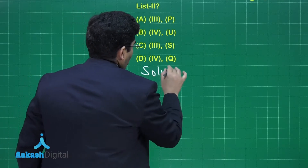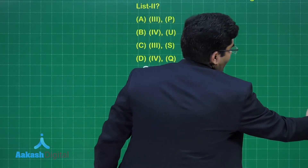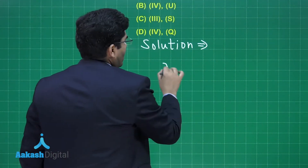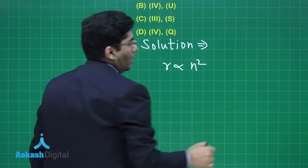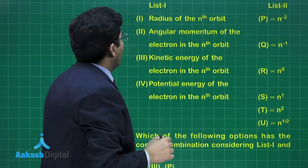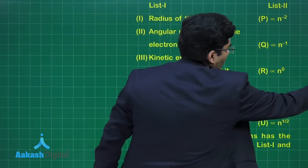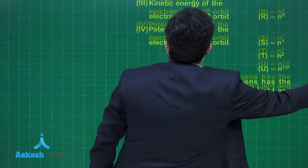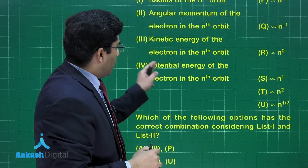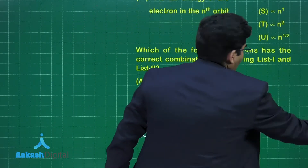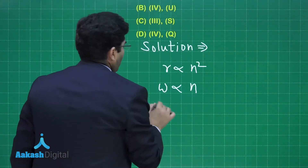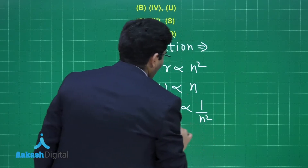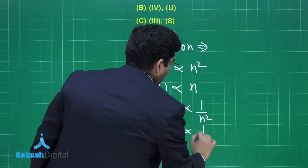Moving on to the solution. The first item in list 1 is the radius of the nth orbit. We know that Bohr's radius is proportional to n squared. I'm not including z because it's not needed for this question. The angular momentum of the electron in the nth orbit is proportional to n. The kinetic energy of the electron in the nth orbit is proportional to 1 upon n squared, and the potential energy is also proportional to 1 upon n squared.